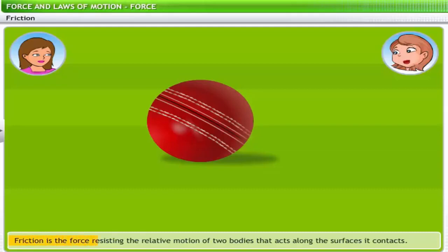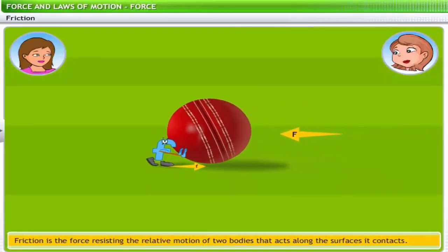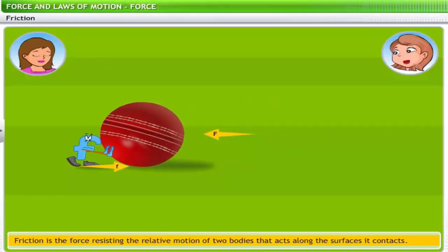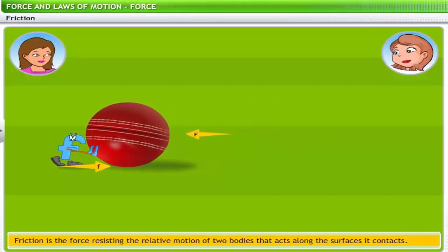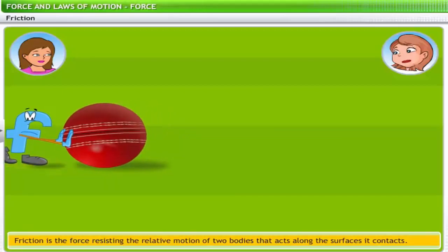Friction is the force resisting the relative motion of two bodies that acts along the surfaces it contacts. The bat hits the ball with a certain force that makes the ball move ahead. When the ball rolls down the field, friction acts in the direction opposite to the direction of the motion of the ball. Gradually, the frictional force overcomes the force that made the ball move, slowing down and eventually stopping the ball.